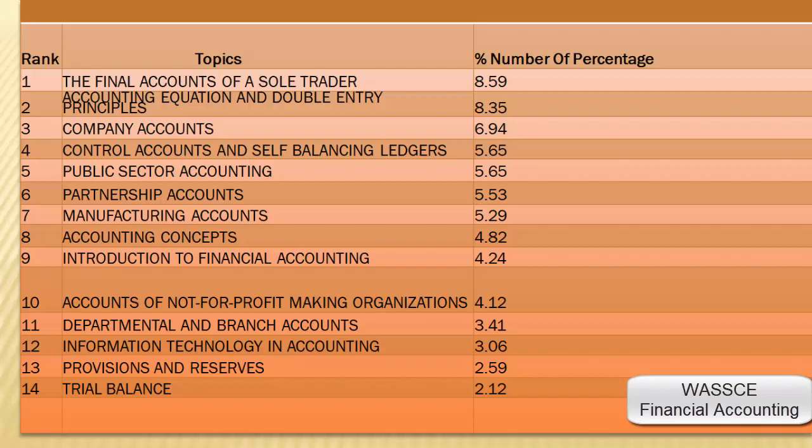Introduction to financial accounting: 4.24%. Accounts of not-for-profit-making organizations: 4.12%. Departmental and branch accounts: 3.41%. Information technology in accounting: 3.06%. Provisions and reserves: 2.59%.